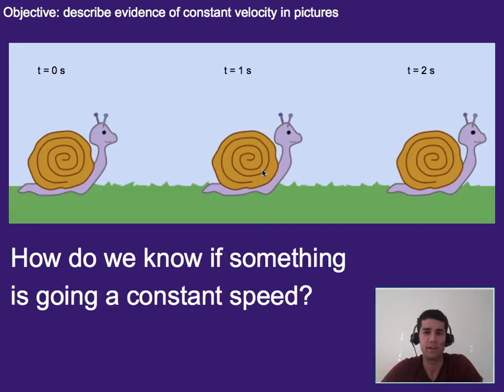The next question is, now that we know how to show motion, how do we show or know if something is going at a constant speed? And if we know it's going in a constant direction too, then that would mean a constant velocity.